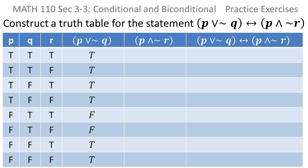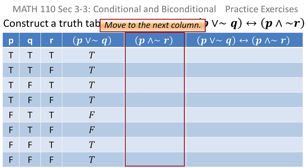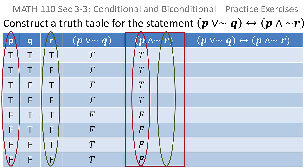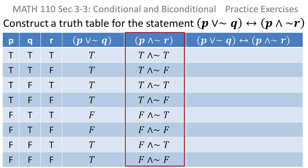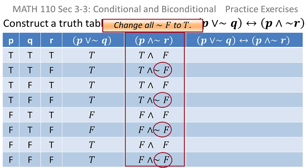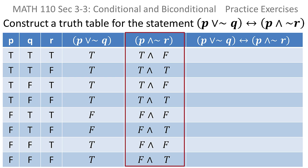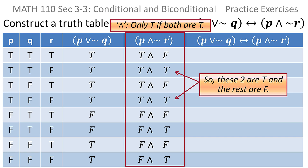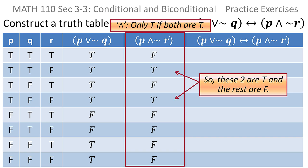Now repeat that process for the next column, which is the AND column. I move the P's over. This time I'm dealing with R's and not Q's, so I move the R's over. I notice I have some not-trues which I can write as falses, and some not-falses which I can write as trues. I'm left with an AND, and I know that for an AND it's only true if they're both true. Scanning down the list, there are only two places where they're both true, so those two will be true and the other six positions will have falses.